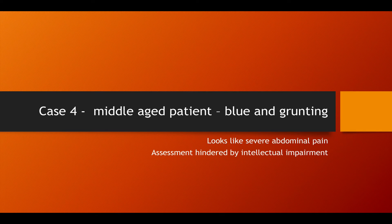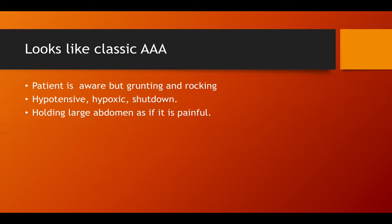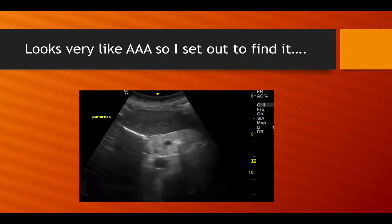Case 4 is a middle-aged patient who is blue and grunting. From the foot of the bed it looks like severe abdominal pain, but assessment is hindered by intellectual impairment. The patient was aware but grunting and rocking — hypotensive, hypoxic, with that mottled blue colour associated with severe catecholamine surge — and holding a large abdomen as if it were painful. I was quite sure it was a AAA and set out to find it.